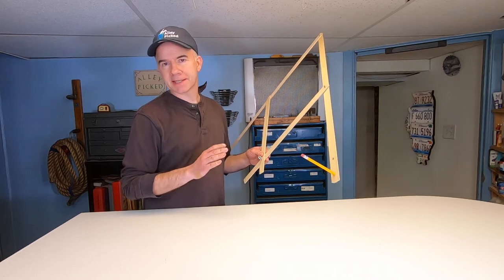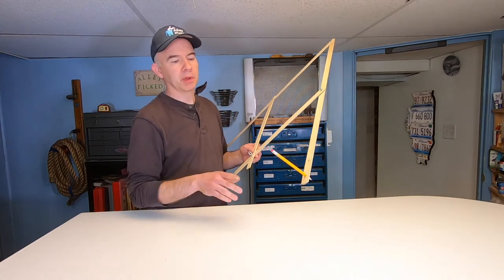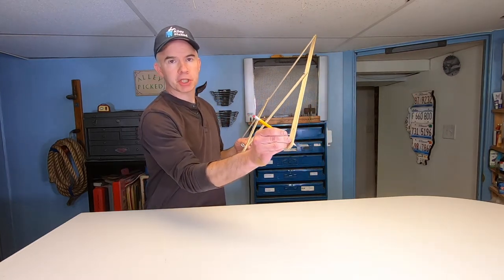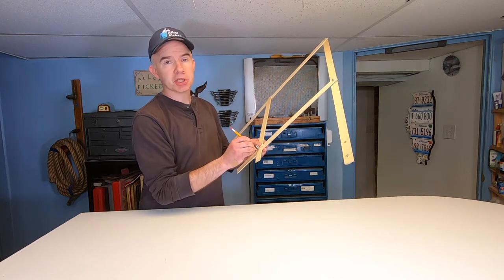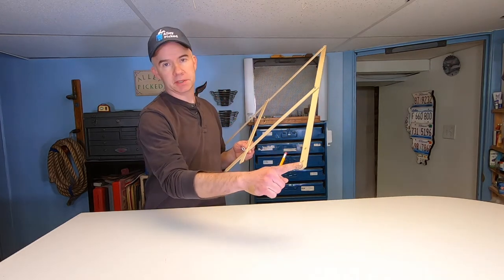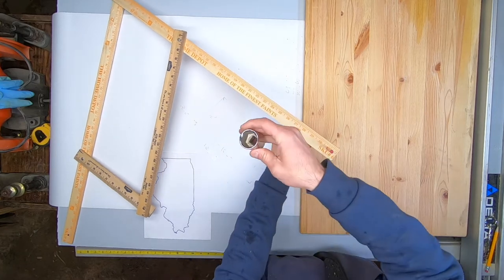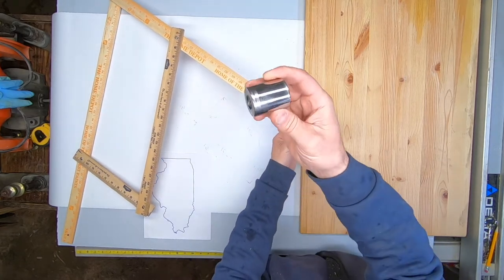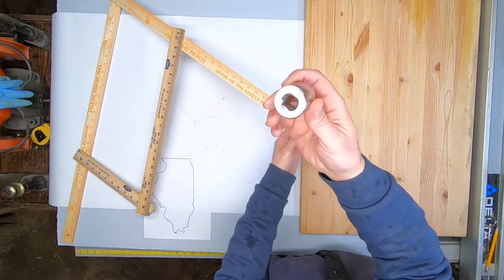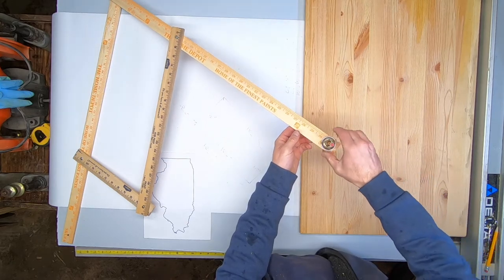Now if you want to use your pantograph as a size reducer, it's really simple. Take your pencil from this position and move it to this position, and take your tracer and move it into the right side. Here's added weight I was mentioning earlier. I'm using a half inch socket over the pencil. If your drawing's too light you might want to add more weight. And now for this brief intermission.